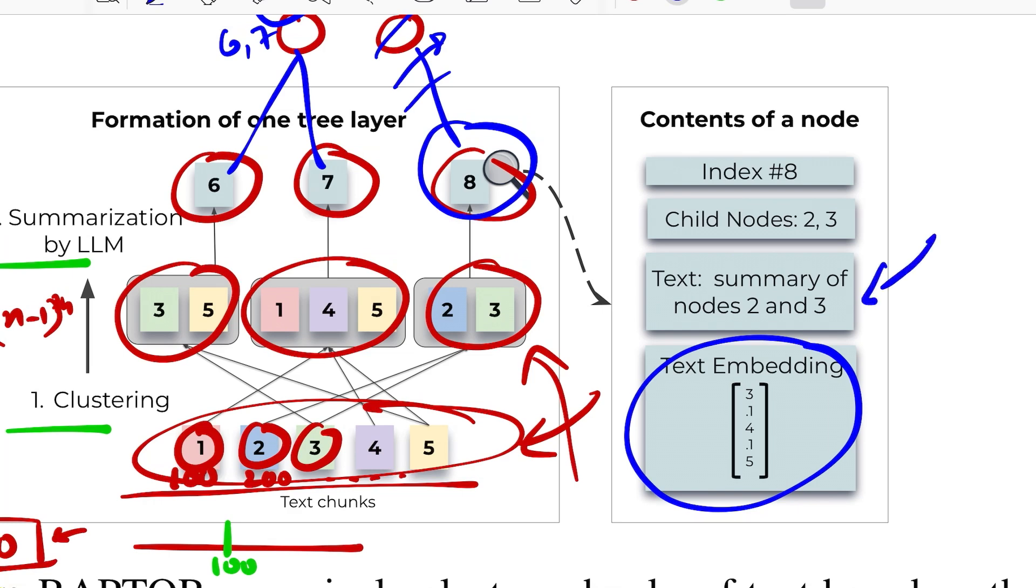So they use sentence transformers to transform it to a numerical vector for performing clustering or any sort of matching if required. Then obviously the text is stored, they also store what's the child for this node and what's the index or ID for this. So these are all the metadata or payload that they store with every node.